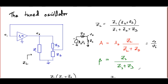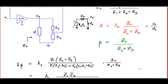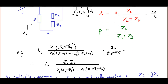To apply the Barkhausen criterion we need A·beta. Multiplying A by beta and doing simple manipulations — multiplying numerator and denominator of ZL by (Z1+Z2+Z3)/(ZL+Z0) — the result simplifies considerably. A·beta equals A0·Z1·Z2 divided by [Z1·(Z2+Z3) + Z0·(Z1+Z2+Z3)].